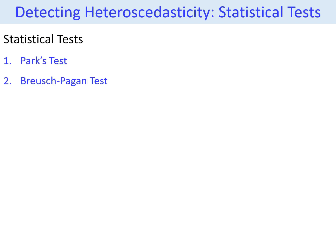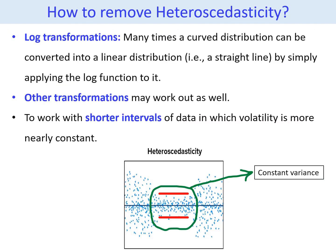Besides the graphical method, there are statistical tests to detect heteroscedasticity — for example, the Parkes test and the Breusch-Pagan test. Once we detect the problem of heteroscedasticity, we have to fix it before conducting further analysis. The first method is log transformation, as per the shape or pattern of the observed residuals — for example, a curved distribution can be converted into a linear or straight-line distribution. Other transformations may also work depending on the pattern. Another method is to work with shorter intervals of data in which volatility or variance is more nearly constant, with little variation.